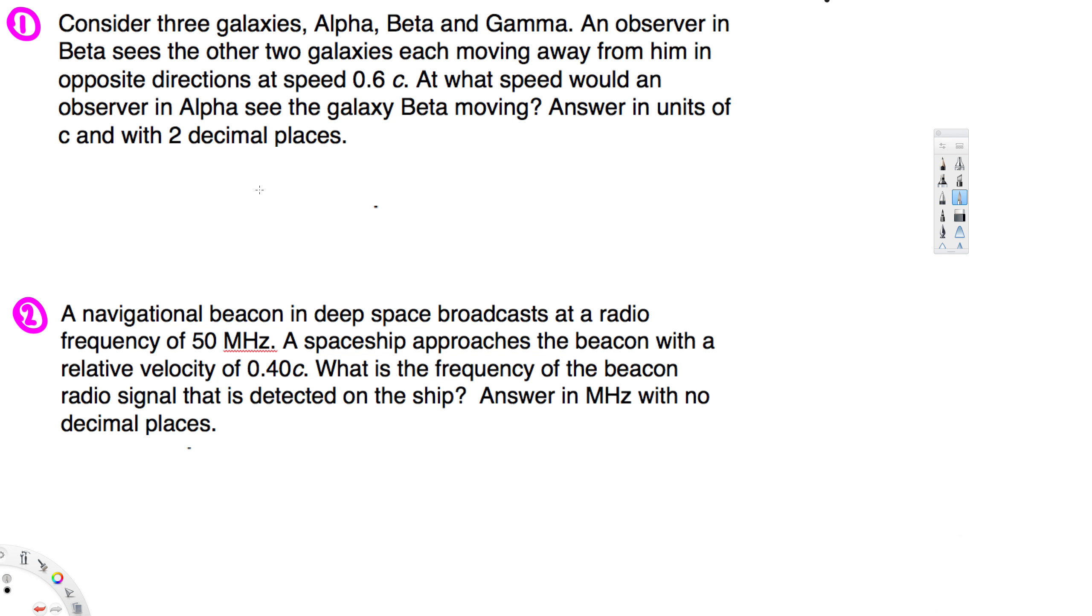Hey, what's going on guys, let's try this problem set here. The first question is asking: consider three galaxies Alpha, Beta and Gamma. An observer in Beta sees the other two galaxies each moving away from him in opposite directions at speed of 0.6c. At what speed would an observer in Alpha see the galaxy Beta moving?